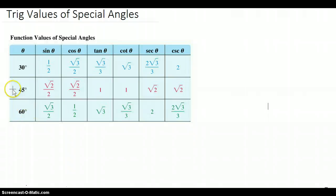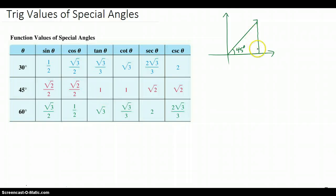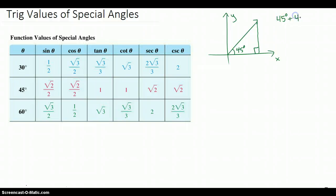So let's start with 45 degrees, the middle one. Here's my 45 degree angle. To find the trig values for an angle, I need to make a right triangle. I always like to go down to my x-axis to make my triangle. We know this is 90 degrees, and because all triangles add up to 180 degrees, we know that this angle is also 45 degrees — 180 degrees.